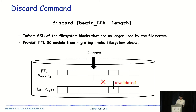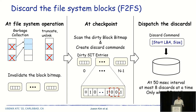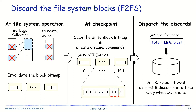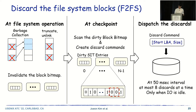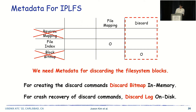This is how F2FS discards file system blocks. When a file system block is invalidated by garbage collection, truncate, or unlink, the file system unsets the corresponding bit in the block bitmap. At the checkpoint routine, the file system scans the dirty block bitmaps and creates discard commands. Only when I/O is idle, at most 8 discard commands are dispatched at a 50 millisecond time interval. This table shows the use of each metadata. Since there is no garbage collection in IPLFS, we remove the reverse mapping. The block bitmap is used for two cases: garbage collection and discard. We develop new metadata for discard to replace the block bitmap, named discard bitmap and discard log.